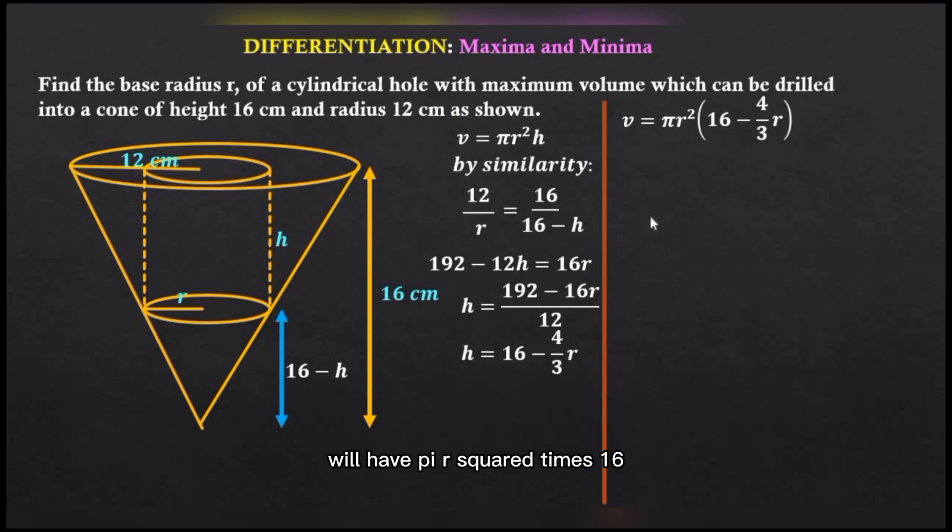Expanding the right hand side, we'll have πr² times 16 minus πr² times (4/3)r, and that is v = 16πr² - (4/3)πr³. Remember we're required to determine the base radius r that will give us maximum volume.